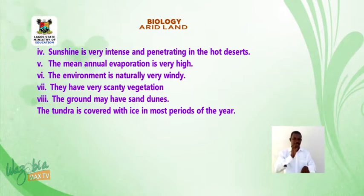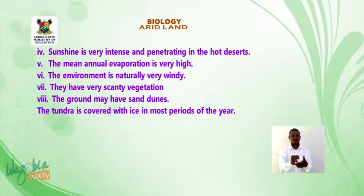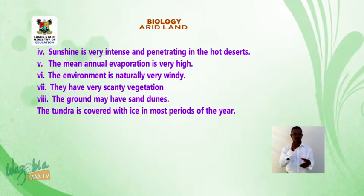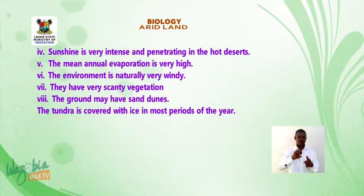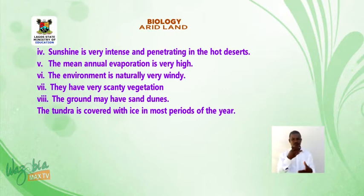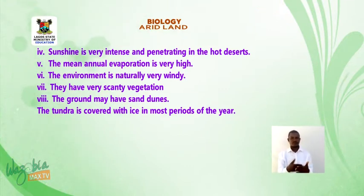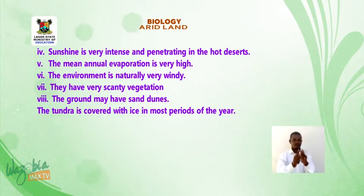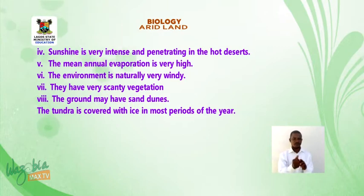Seven, they have very scanty vegetation — the vegetation there is affected in its growth, so it is very sparse on the ground. Eight, the ground may have sand dunes because of all the characteristics mentioned. The tundra is covered with ice for most of the year.